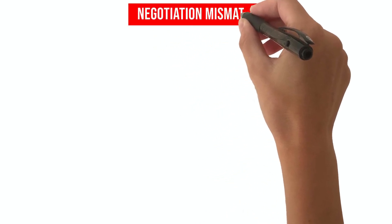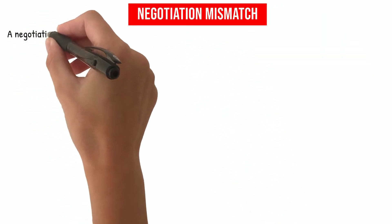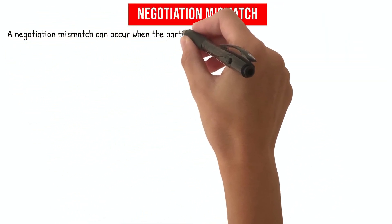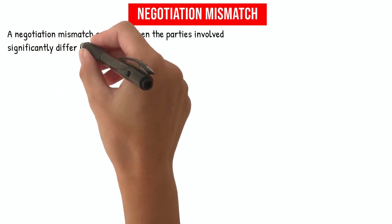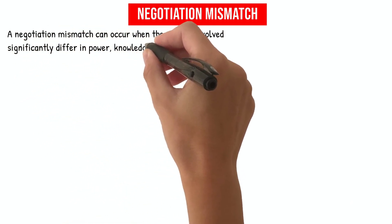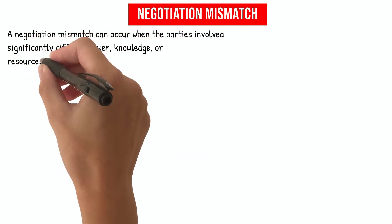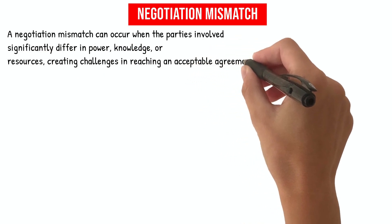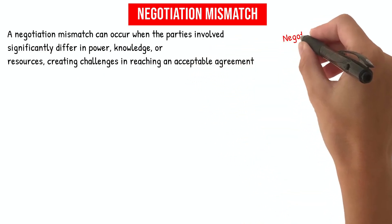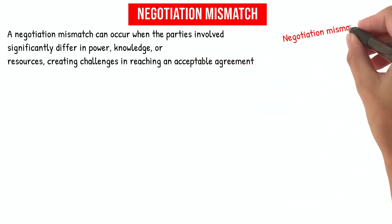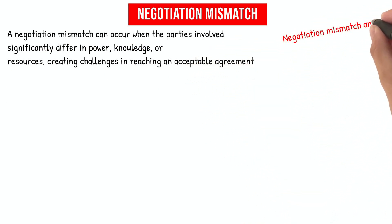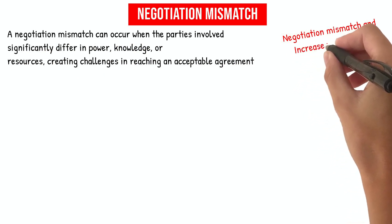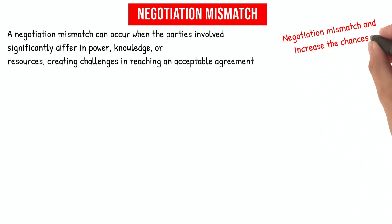Negotiation Mismatch. A negotiation mismatch can occur when the parties involved significantly differ in power, knowledge, or resources, creating challenges in reaching an acceptable agreement. However, several ways exist to respond to a negotiation mismatch and increase the chances of reaching a successful outcome.